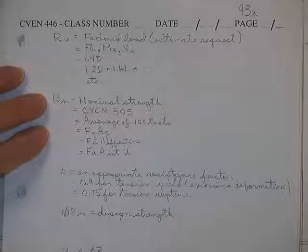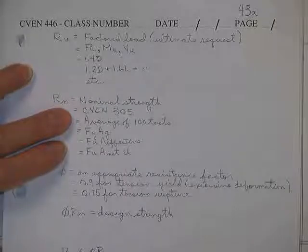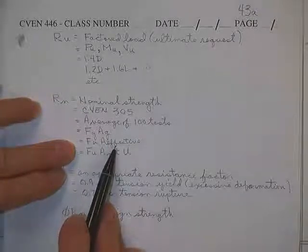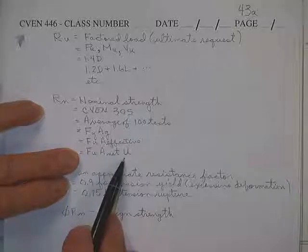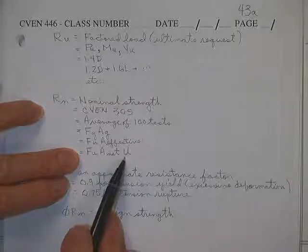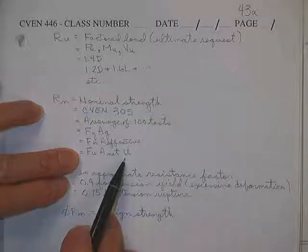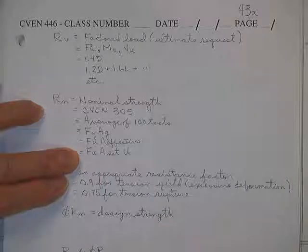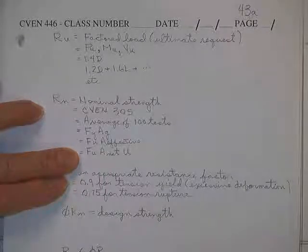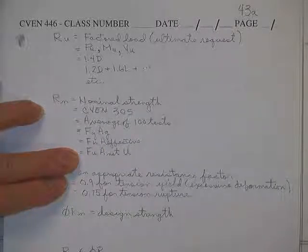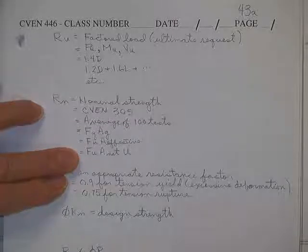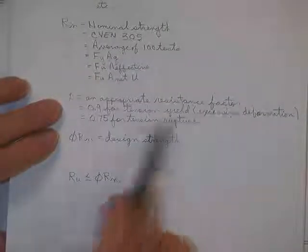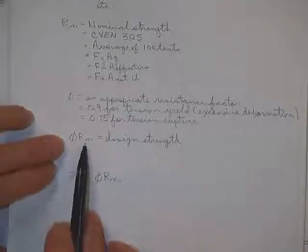R sub N is your nominal strength. That's an average of 100 tests or 1,000 tests or it's what you'd find from your 305 book. It is yield times gross or it is ultimate times effective. And effective is net times a joint efficiency, times something that takes into account, do the stresses flow nicely from all the elements coming in to all the steel elements coming out. Elements being like an angle. It's got two elements. Like a wide flange. Wide flange has got webs and flanges. Those are elements of the shape.